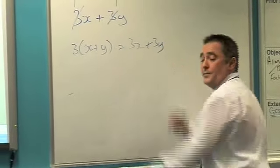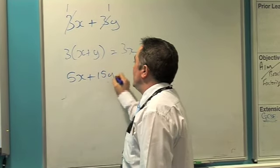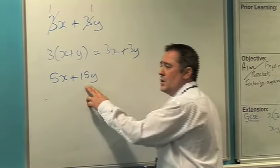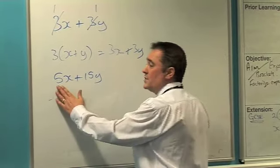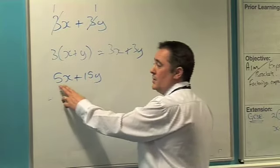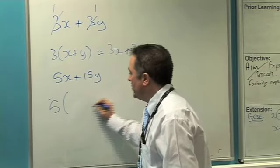I'll leave that one on. 5x plus 15y. The common factor this time. What will equally go into 5 and 15 with no remainders? Well, it's got to be 5. Again, stick 5 outside your bracket. Open your bracket.